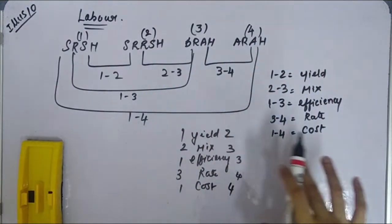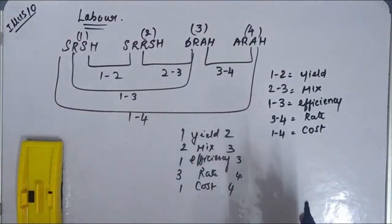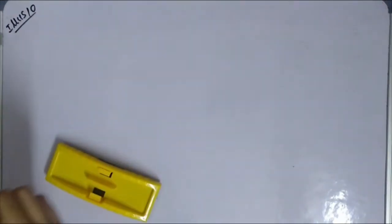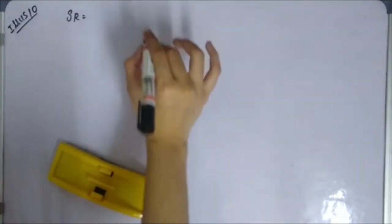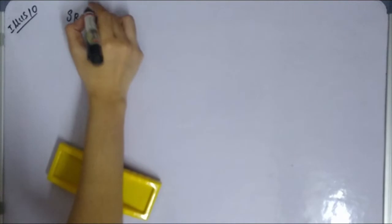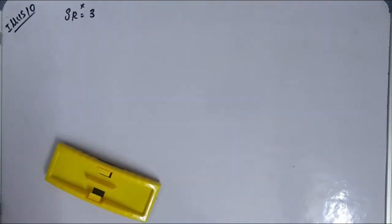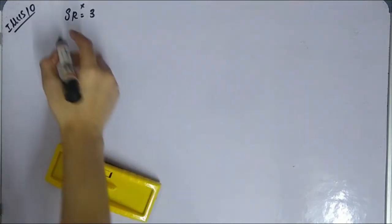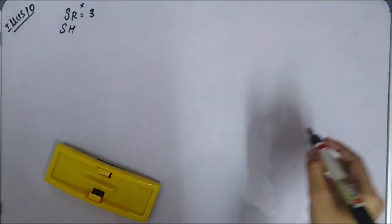Now we will calculate the labor variances for Illustration 10. There are two departments: X and Y. For Department X, the standard rate is 3 rupees and the standard hours produced is 8,640.